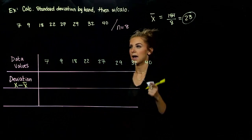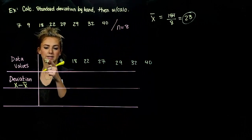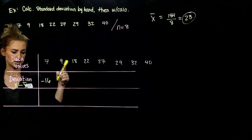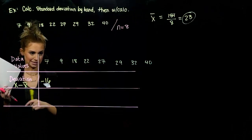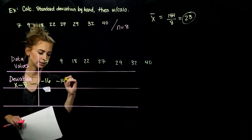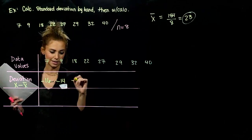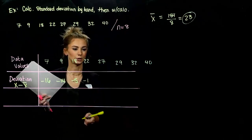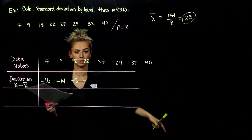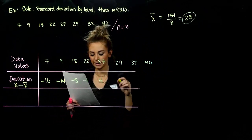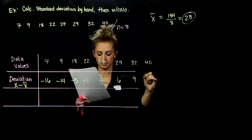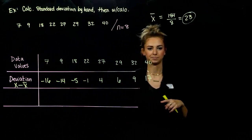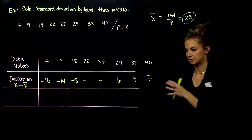The data value minus the mean tells me how many deviations away it is and in which direction. So 7 minus 23 gives us negative 16 — it's 16 units away from the mean and negative, meaning it's to the left. 9 minus 23 is negative 14. 18 minus 23 is negative 5. 22 minus 23 is negative 1. 27 is positive by 4, 29 is over by 6, 32 by 9, and 40 by 17. The plus and minus tells us direction — left is negative, right is positive.